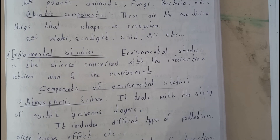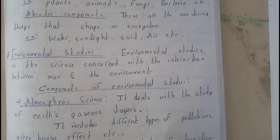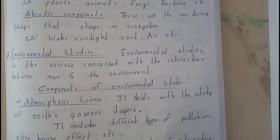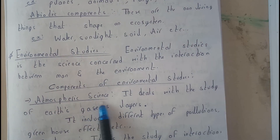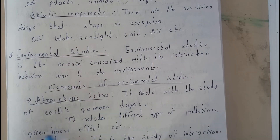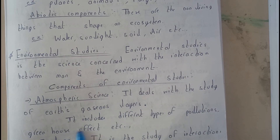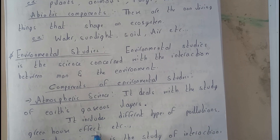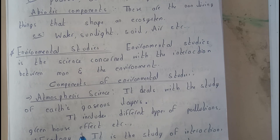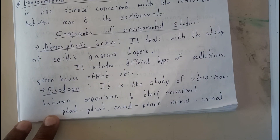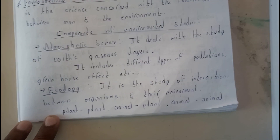The first component is atmospheric science. It deals with the study of Earth's gases. It includes different types of pollution and the greenhouse effect. That covers atmospheric science. Now let's go through ecology.